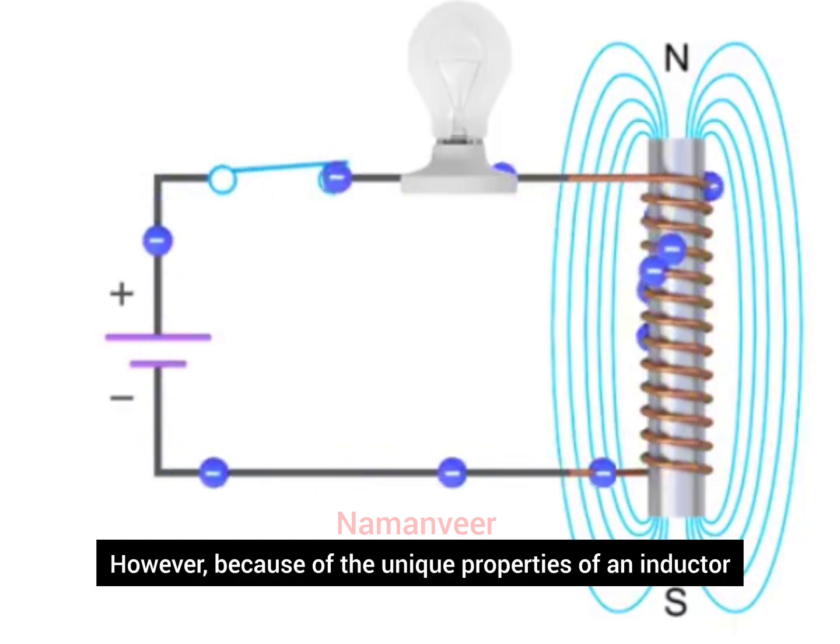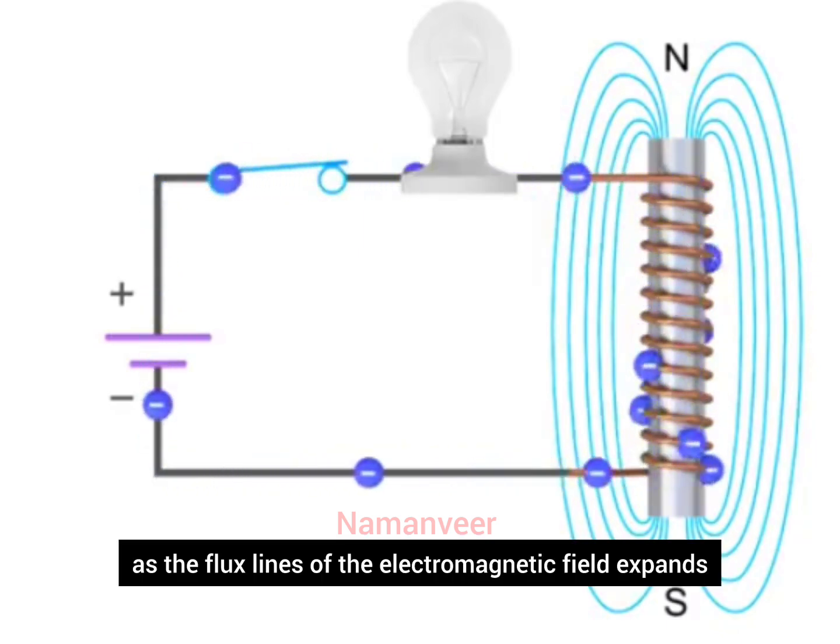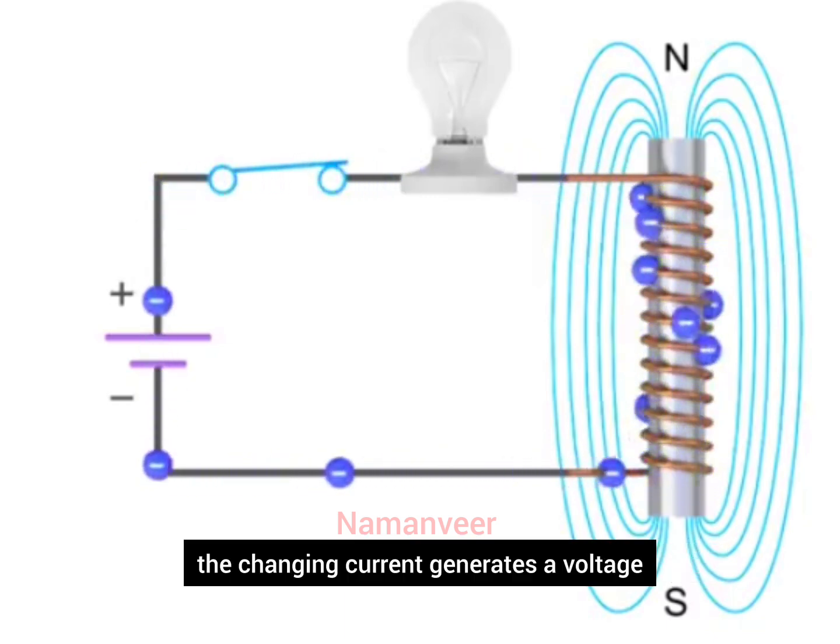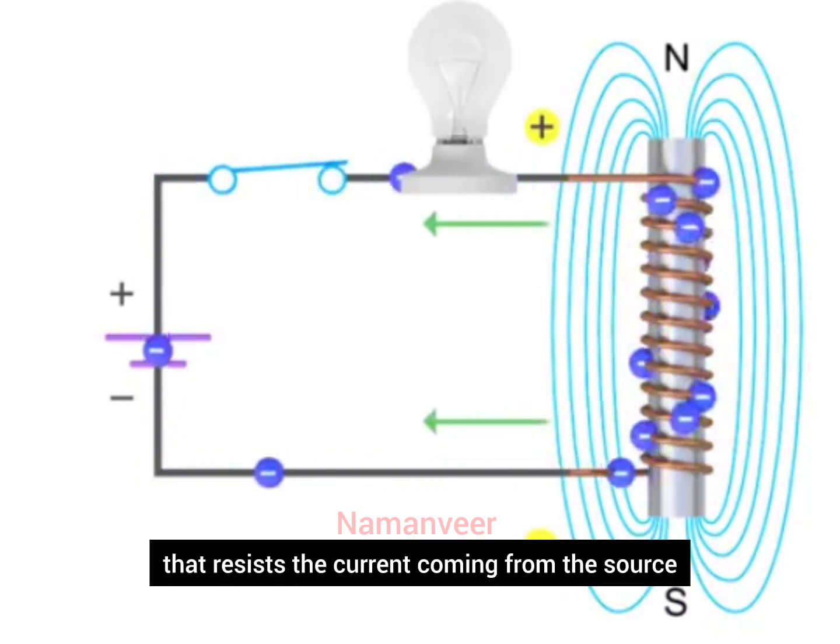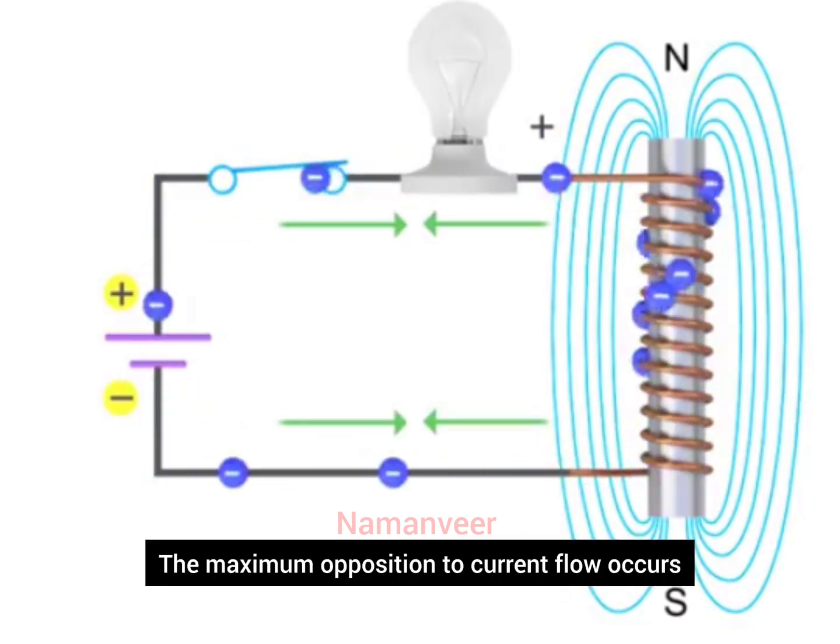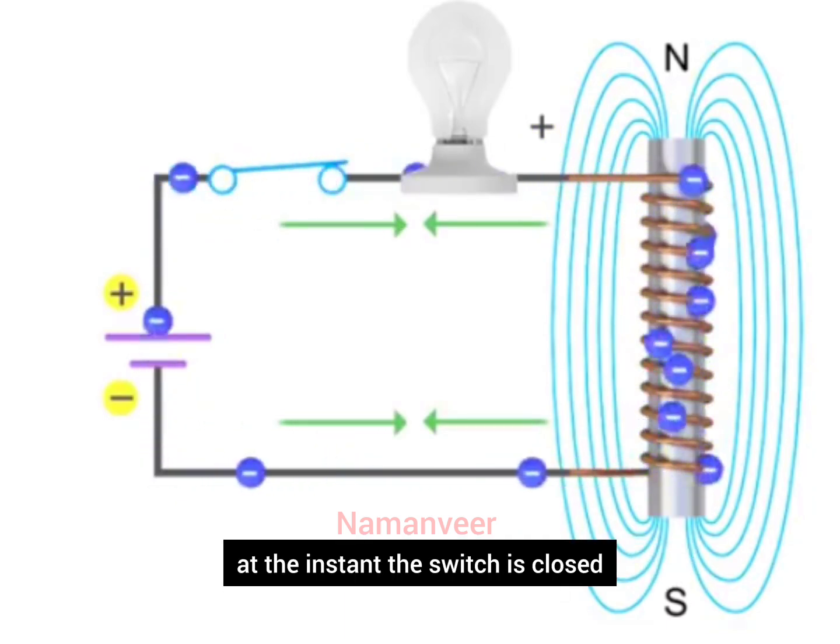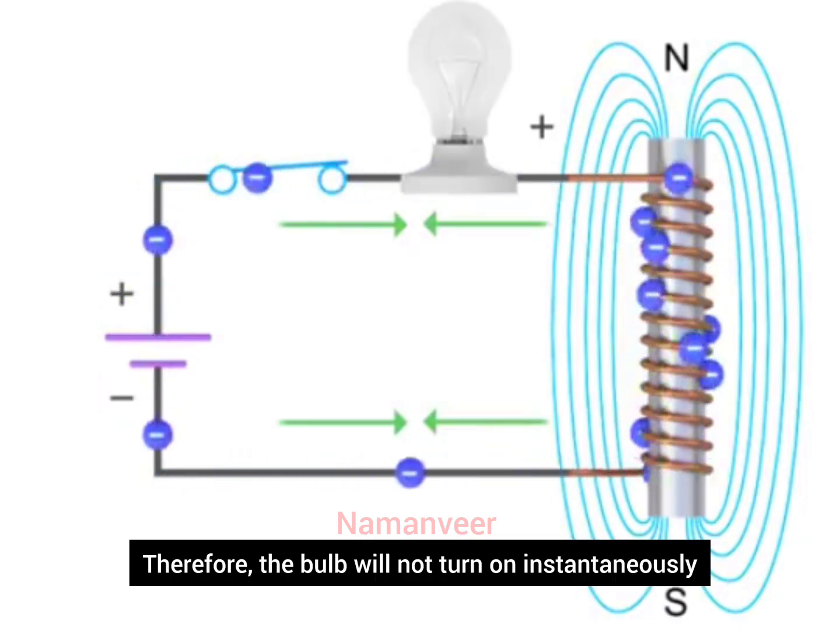However, because of the unique properties of an inductor, as the flux lines of the electromagnetic field expands, the changing current generates a voltage that resists the current coming from the source. The maximum opposition to current flow occurs at the instant the switch is closed. Therefore, the bulb will not turn on instantaneously.